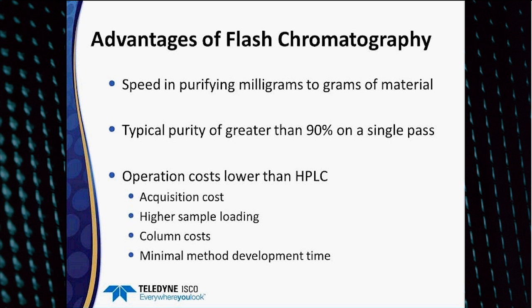When you get into flash columns filled with C18 or reverse phase materials, the cost is higher, so those columns are intended to be used multiple times. Also, quite a bit of automation has been implemented into flash chromatography to minimize method development time, which we'll discuss later.